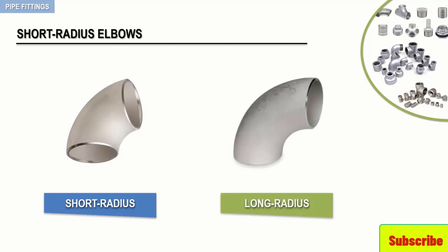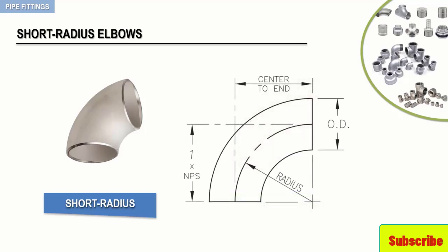Conversely, the short radius elbow also creates a rather large pressure drop inside the line and does not have the smooth flow characteristics the long radius elbow has. For these reasons, the short radius elbow is seldom used.